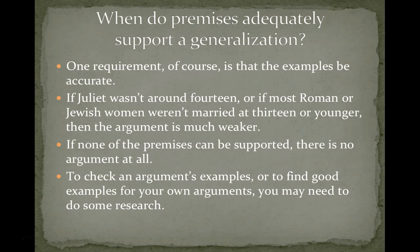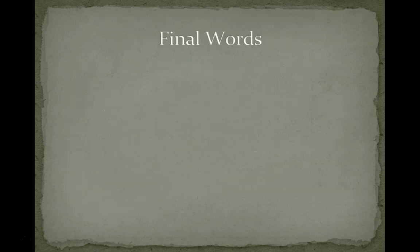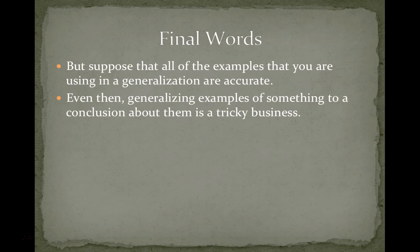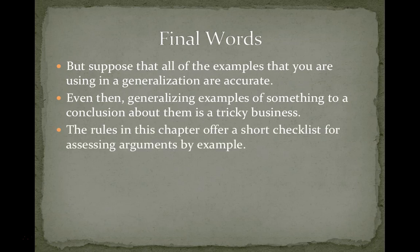As we'll see later in the quarter, faulty generalization is an example of a logical fallacy that involves generalizing from improper premises. A few final words: even when all of the examples you're using are accurate, generalizing from a set number of examples to a conclusion can be tricky business. The rules in this chapter are going to offer a sort of checklist for assessing arguments that use generalization.